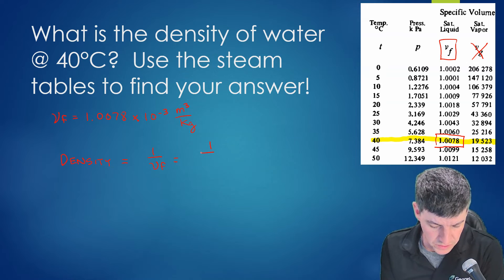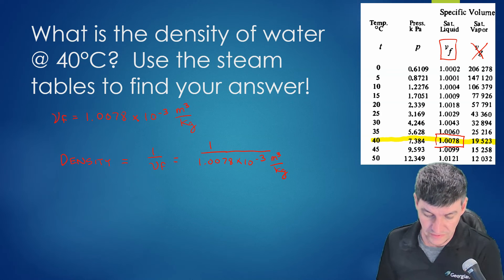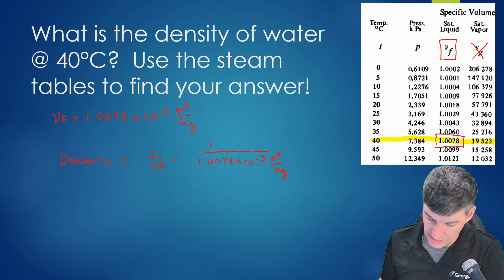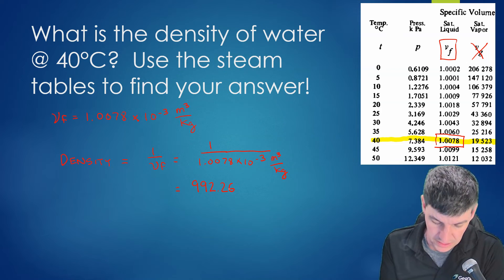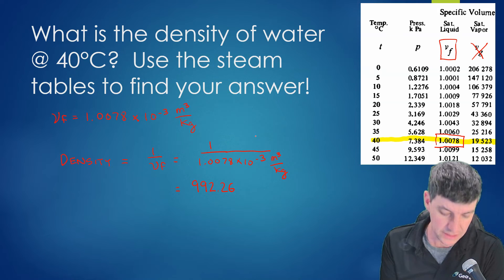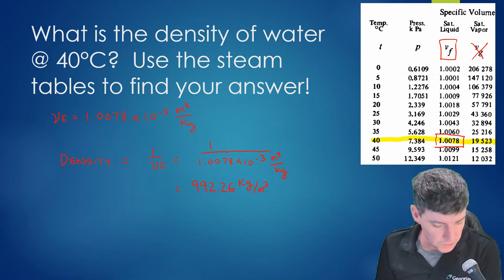Density equals 1 divided by 1.0078 times 10 to the negative 3, with units of cubic meters per kilogram. Punching that into my calculator — 1 divided by 1.0078 times 10 to the exponent negative 3 — I get a value of 992.26. The units: cubic meters stays on the bottom, kilograms comes to the top, giving me kilograms per cubic meter. That makes sense — just a little less than 1000, so I'm in the right ballpark.